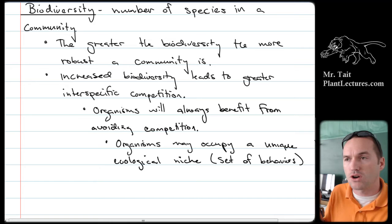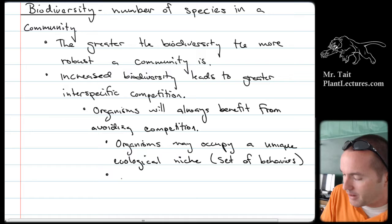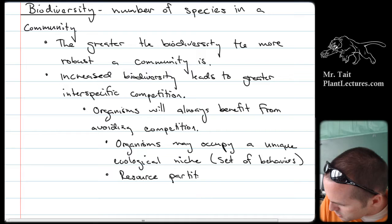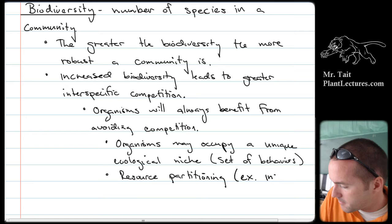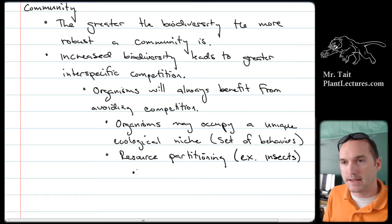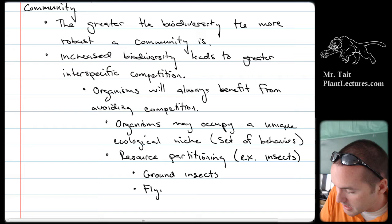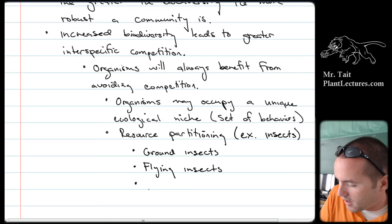The whole reason ecological niches are important is because of something called resource partitioning. 'Partition' means to divide up. Resource partitioning is when you have a specific resource in an ecosystem — let's say insects. There are different types of insects: ground insects, flying insects, and surface water insects.